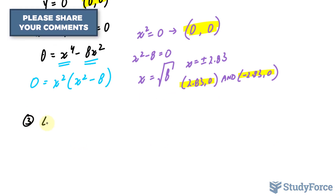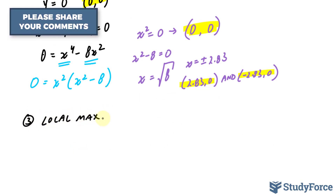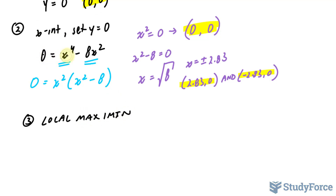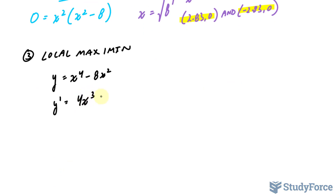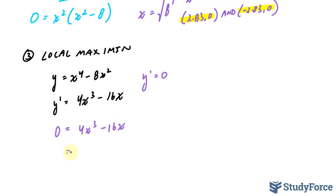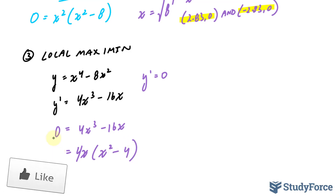Let's do this together. Step 3: local max and min. Our function was y equal to x to the power of 4 minus 8x squared. Using the power rule for both terms, y prime is 4x to the power of 3 minus 16x. Setting this equal to 0: 0 equals 4x cubed minus 16x. I can factor out 4x, giving me 4x times (x squared minus 4) equals 0.